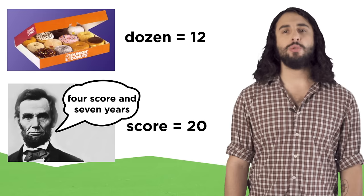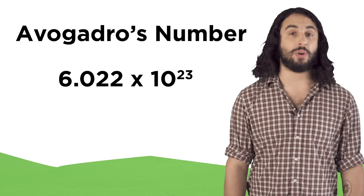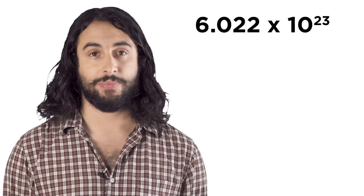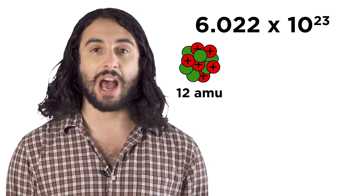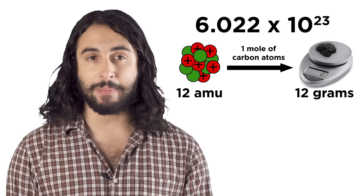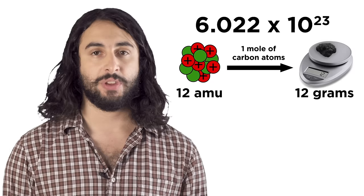A mole is just a number like a dozen or a score, but it is a huge number. It is equal to Avogadro's number which is 6.022 times 10 to the 23rd - that's almost a trillion trillion. What's special about this number is that it is the number of carbon atoms in exactly 12 grams. One carbon atom with six protons and six neutrons weighs twelve atomic mass units, so a mole is the number of carbon atoms that weigh that same amount but in grams, which is an amount that we can see, touch and do chemistry with.